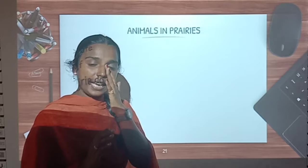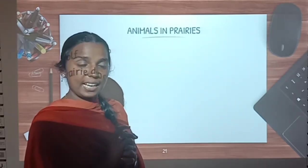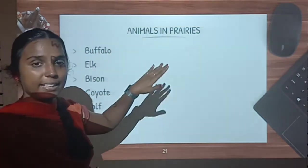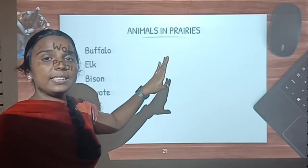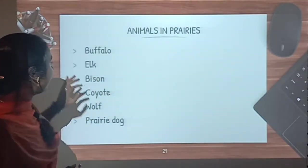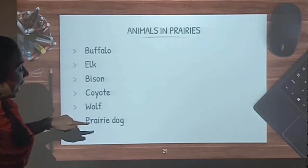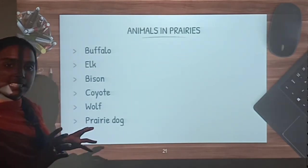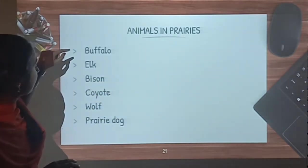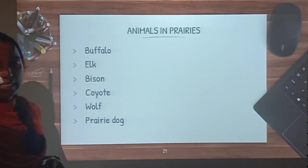Now let us recall all the animals we have learned. Let us see what animals we can find in each grassland. First we have seen the animals in prairies, which are in North America. In North America we can see buffalo, elk, bison, coyote, wolf and prairie dog. In the grasslands of North America, that is in the prairies, we can see buffalo, elk, bison, coyote, wolf and prairie dog.